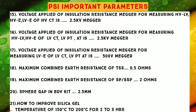Number 15: Voltage applied for Insulation Resistance measurement for HV-LV, HV-A, and LV-A of HV CT is 2.5 KV Megger. Number 16: Voltage applied for Insulation Resistance measurement for HV-LV and HV-A of LV CT and LV PT and Auxiliary Transformer is 2.5 KV Megger.